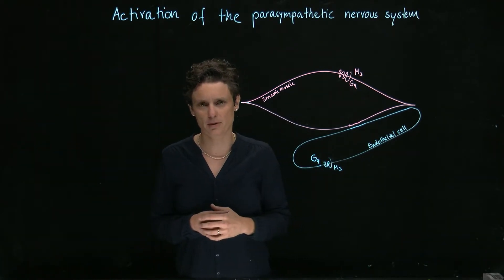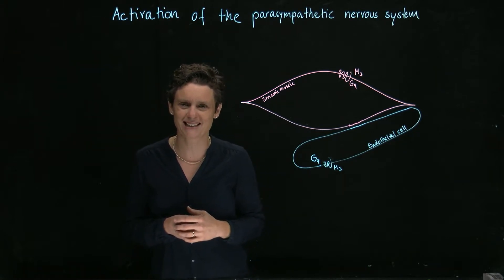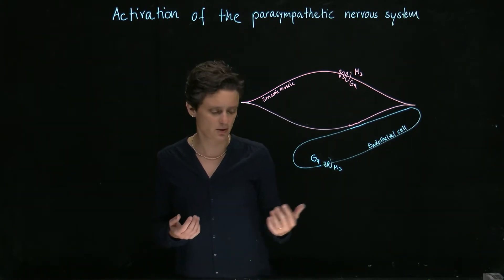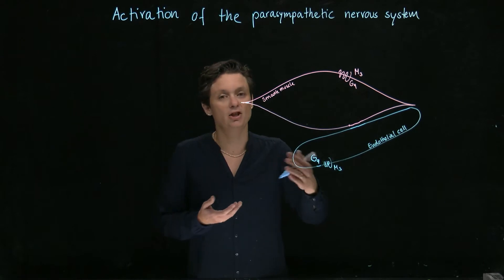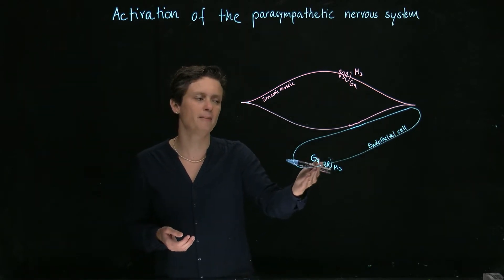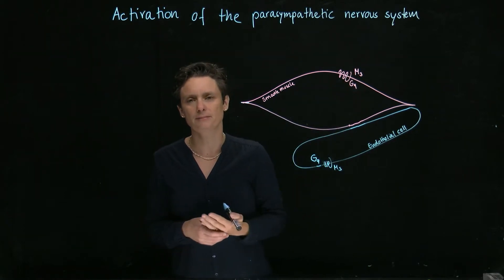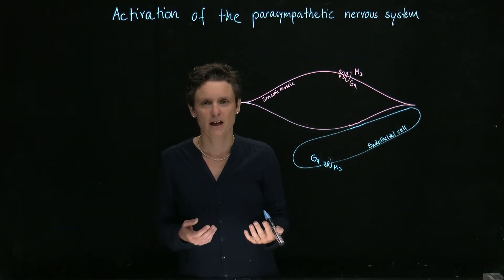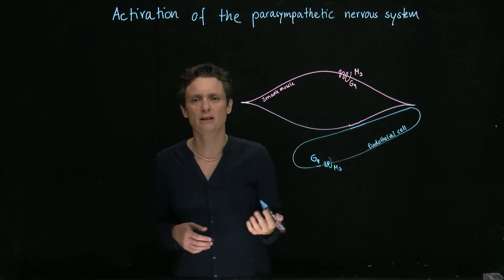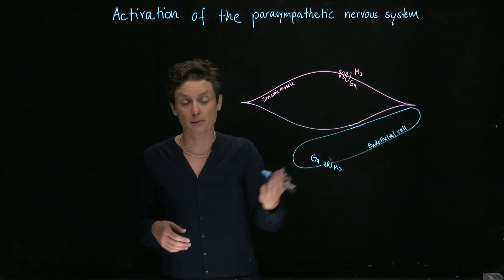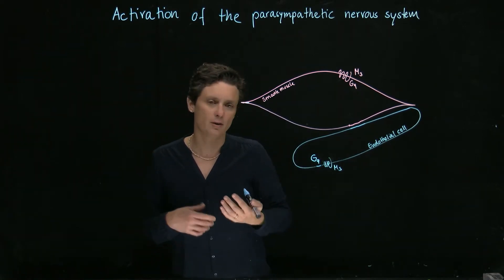However, we need to think about these M3 receptors on the blood vessels when we are thinking about drugs. Because obviously, if you inject acetylcholine or give a muscarine agonist, they could just go there and activate this receptor. We will have an effect.